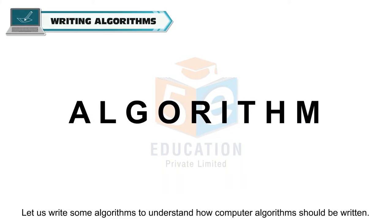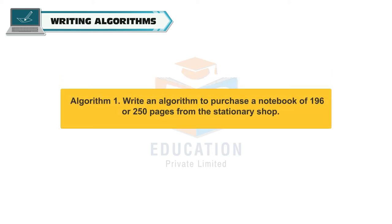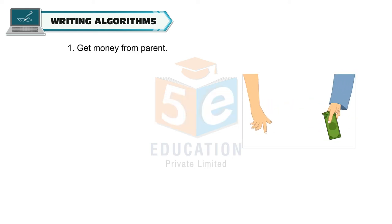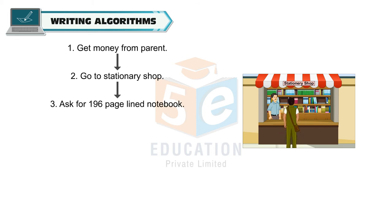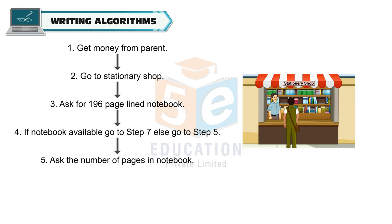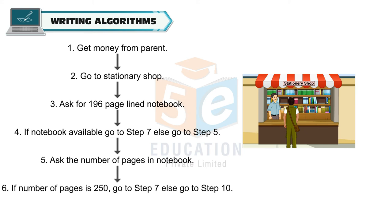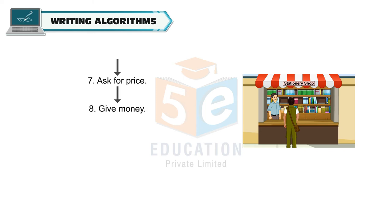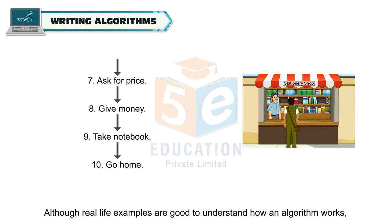Let us write some algorithms to understand how computer algorithms should be written. Algorithm 1: write an algorithm to purchase a notebook of 196 or 250 pages from the stationery shop. Steps: get money from parent, go to stationery shop, ask for 196-page lined notebook. If notebook available, go to step 7. Else go to step 5. Ask the number of pages in notebook. If number of pages is 250, go to step 7. Else go to step 10. Ask for price, give money, take notebook, go home.